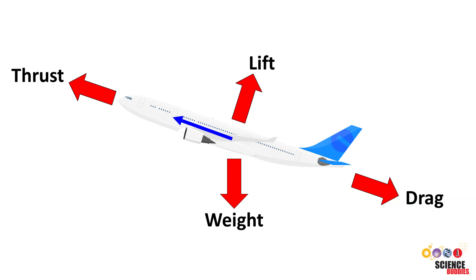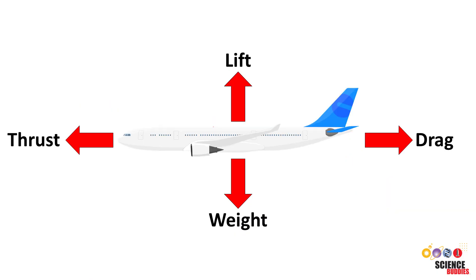The lift force is perpendicular to the direction of motion, so it is no longer straight up. It does still have a vertical component and contributes to keeping the plane in the air. So what we saw earlier — with the drag force perfectly horizontal and the lift force perfectly vertical — was just a special case when the plane is flying horizontally in still air.